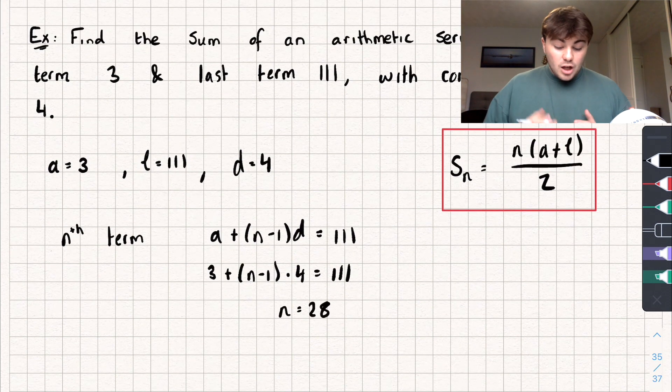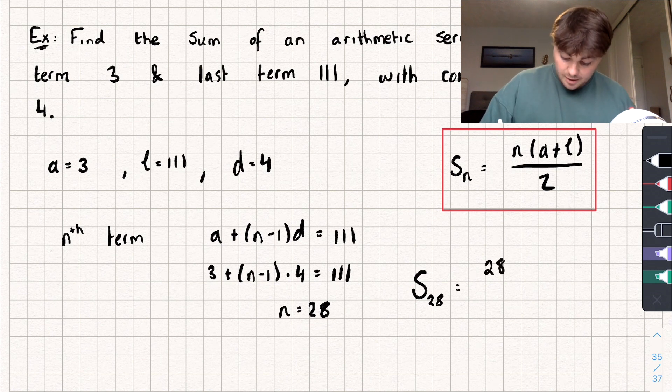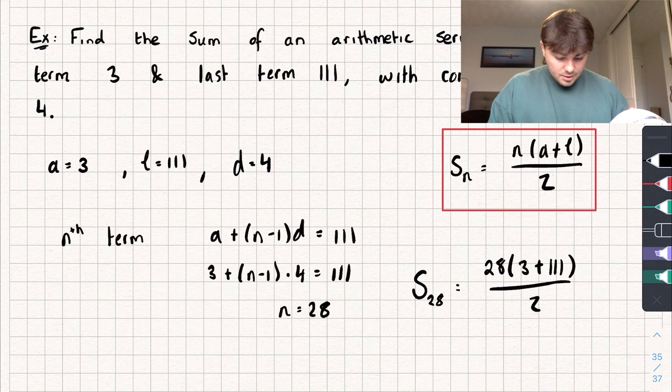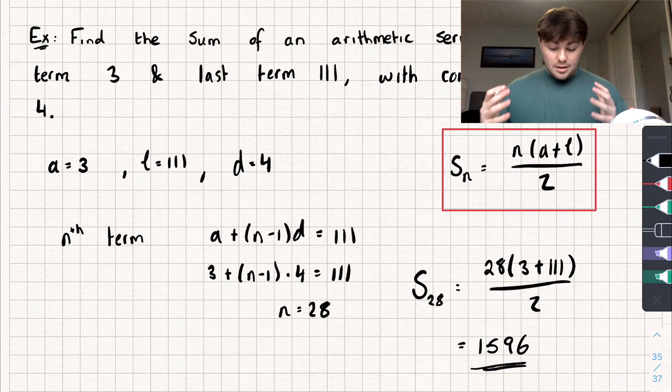So now I know the 111th term is when N is equal to 28, so we want to find the sum, so S of 28, and let's substitute in what we know. So we've got 28 multiplied by the first term, which is 3, plus the last term, which is 111, divided by 2. And if I work that out on my calculator, we get 28 multiplied by 114, and then we're going to divide that by 2, and we get a nice answer of 1596 as the sum of the series up to the 28th term.